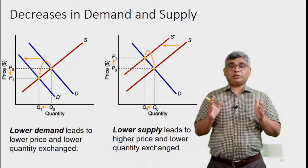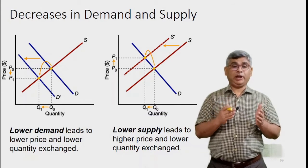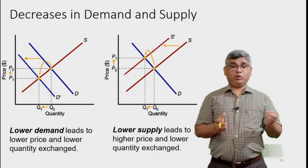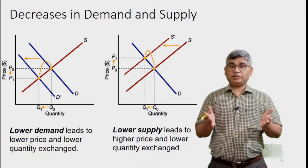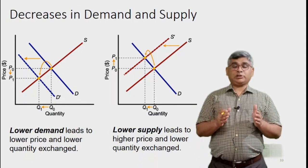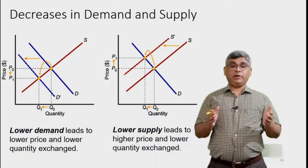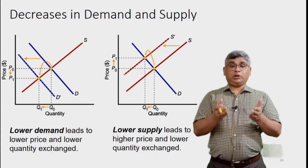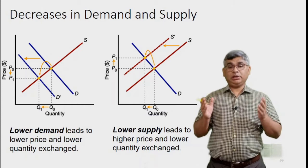Similarly, if the supply curve remains the same and demand decreases, the price will fall — lower demand leads to lower prices and lower quantities exchanged. Conversely, if supply decreases — the supply curve moves towards the left from S to S' — lower supply leads to higher prices and lower quantities exchanged, as evident from the diagram.